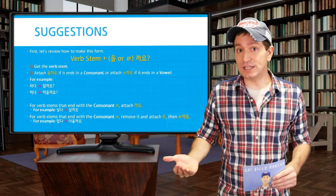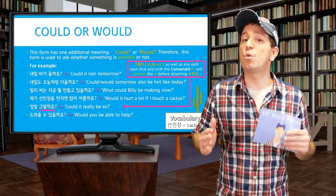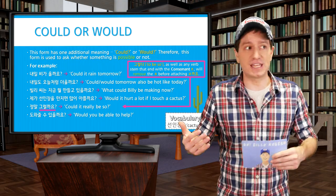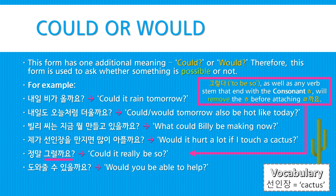So this same form, which we already learned can mean 'shall I' or 'shall we,' has one additional meaning. It can also be used to say 'could' or 'would,' such as when you're asking whether something could or would even be possible. For example: 내일 비가 올까요? — Could it rain tomorrow? 내일도 오늘처럼 더울까요? — Could or would tomorrow also be hot like today? Billy 씨는 지금 뭘 만들고 있을까요? — What could Billy be making now? 제가 선인장을 만지면 많이 아플까요? — Would it hurt a lot if I touch a cactus? 정말 그럴까요? — Could it really be so?